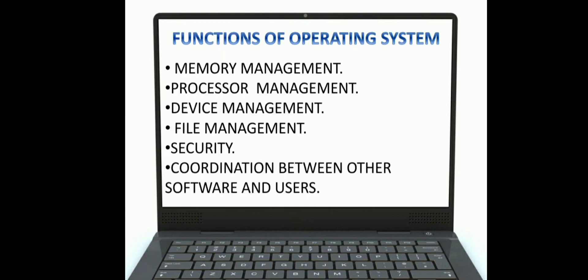Now we will discuss the functions of operating systems. This is the most important topic — you have to note it down in your copy. The first function is memory management. An operating system keeps track of the primary memory. In class 3 we read about primary memory — there are two types: RAM and ROM. The operating system keeps track of both RAM and ROM.